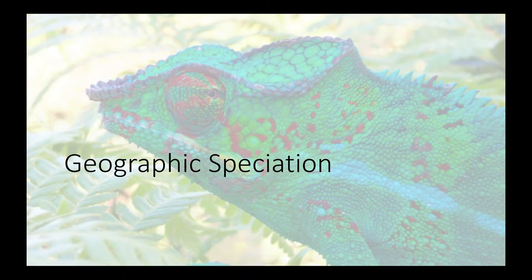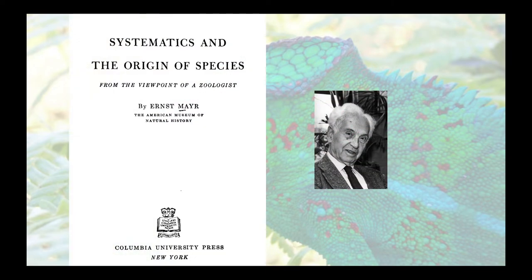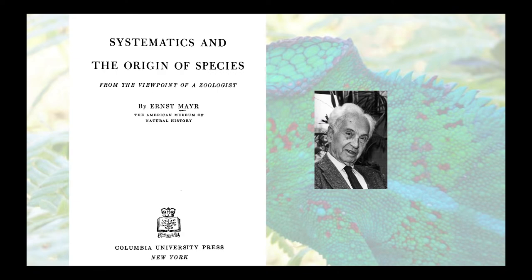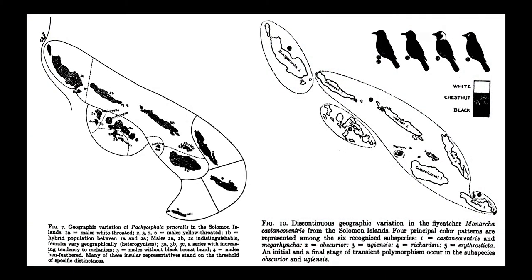The other key principle is geographic speciation. I want to take a walk into the past. If you haven't read Systematics and the Origin of Species, you might want to — it's more of historical interest now, but very useful and informative history. It was written by Ernst Mayr, who was quite a bit younger when he wrote it in 1942. These are famous examples from Mayr's work in the South Pacific.